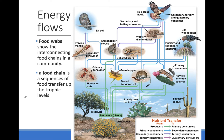The primary consumers are the herbivores eating plants. Secondary consumers are carnivores or omnivores that eat the herbivores. You'll notice there are very few tertiary and quaternary consumers. By the time the energy has been transferred to the top of the food web, much of it has been used by organisms or lost as heat.